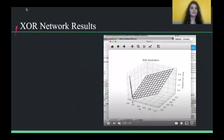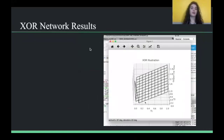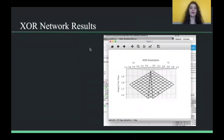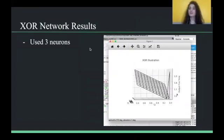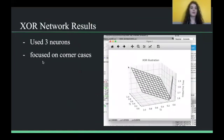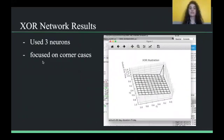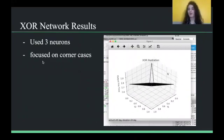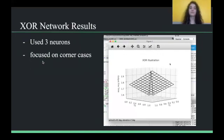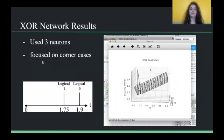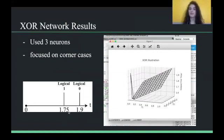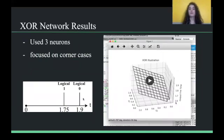Now, on to our results. So, with ours, you can see our graph is a little bit different, and there's a reason for that. So, we used three neurons to achieve this functionality, and we only focused on the corner cases. So, that's why our graph is a little bit different. We didn't so much focus on the in-betweens, but just what the truth table outputs are. So, for ours, our timing diagram is a little bit different.